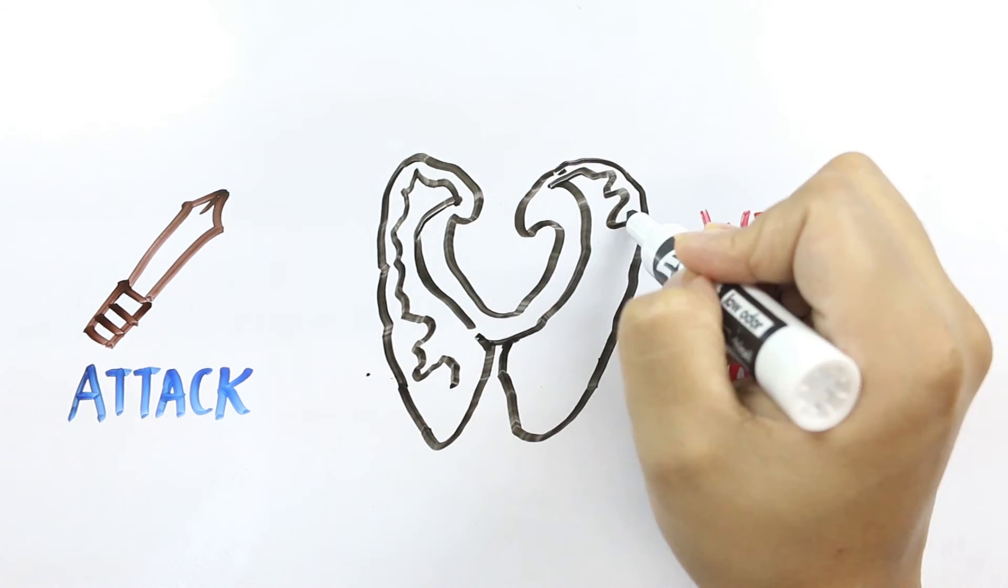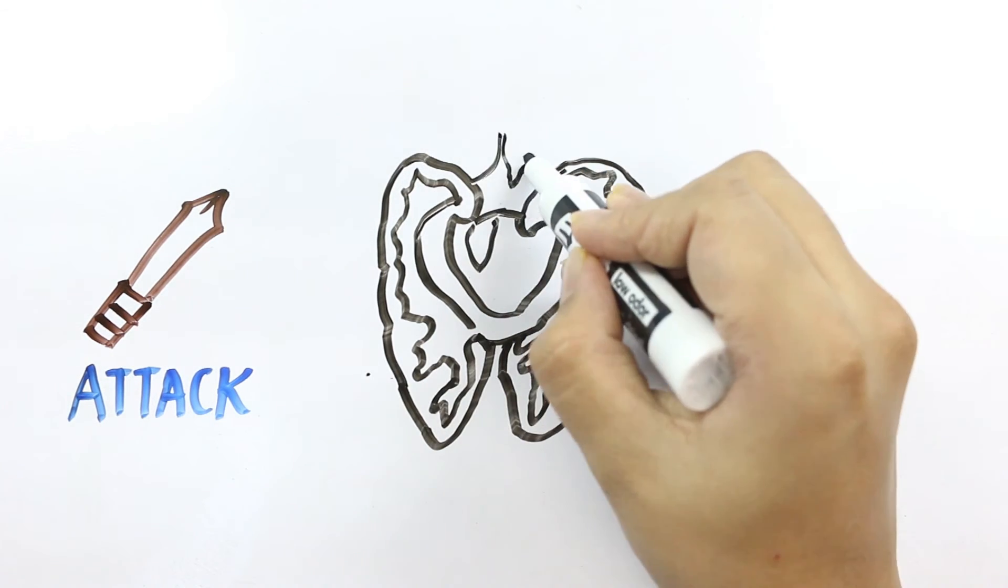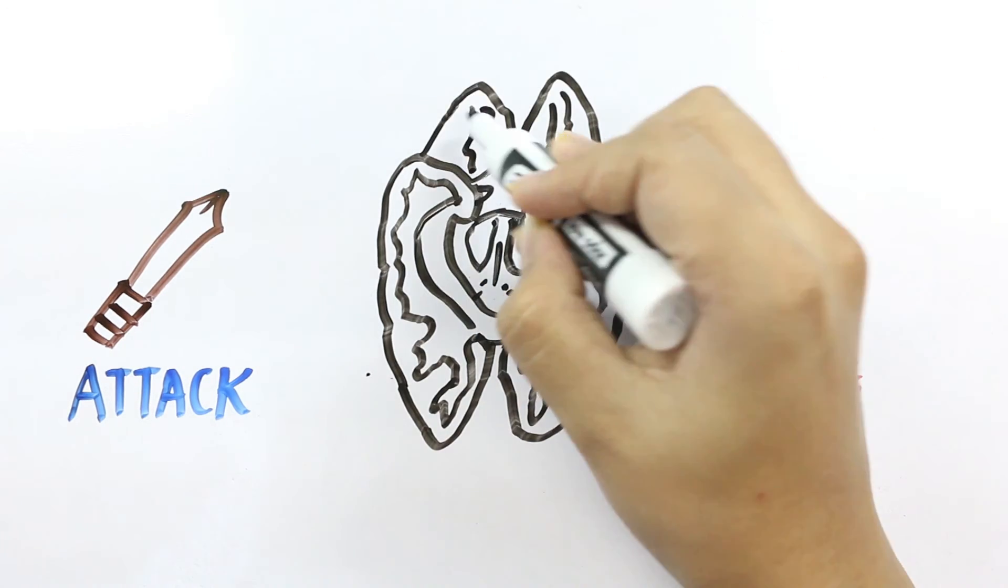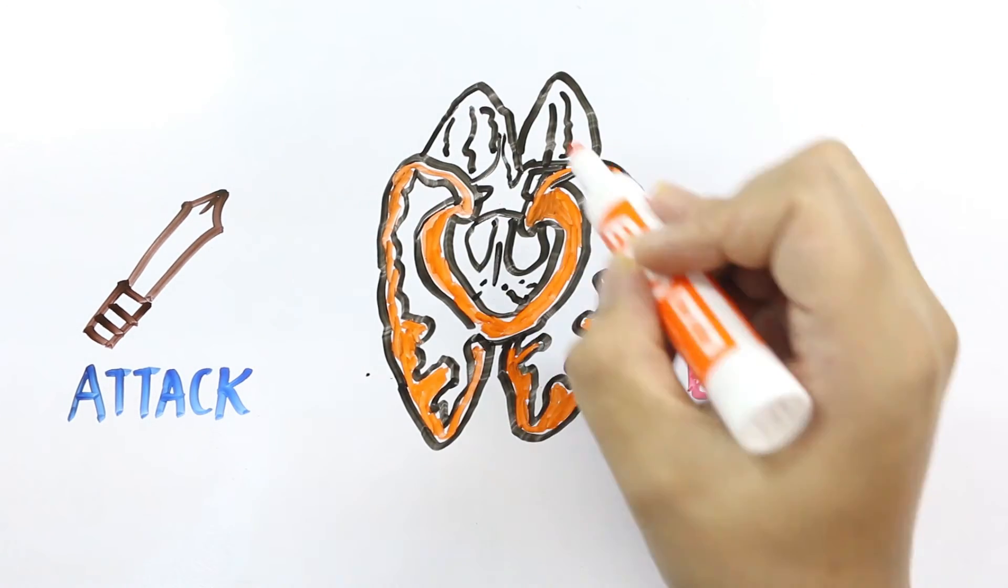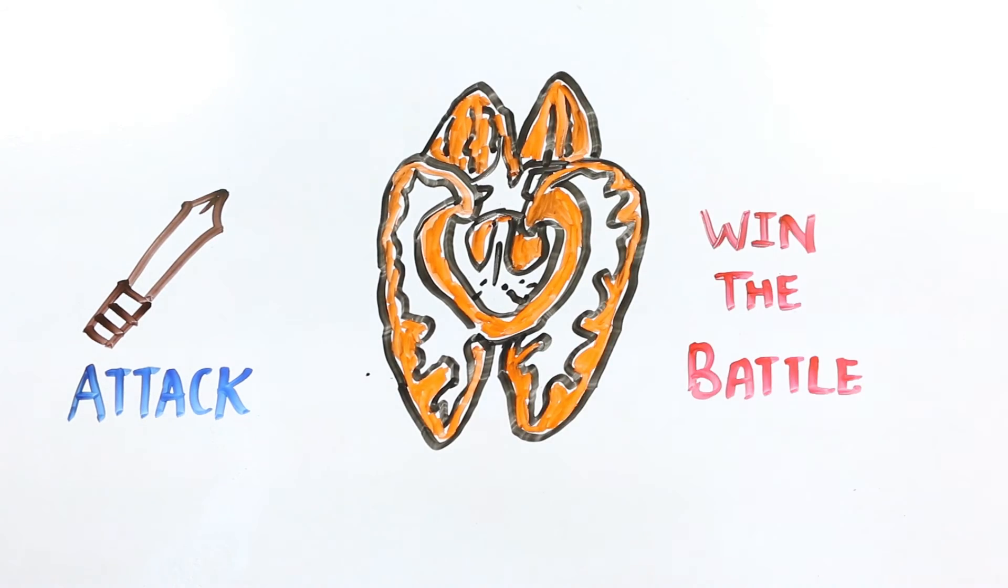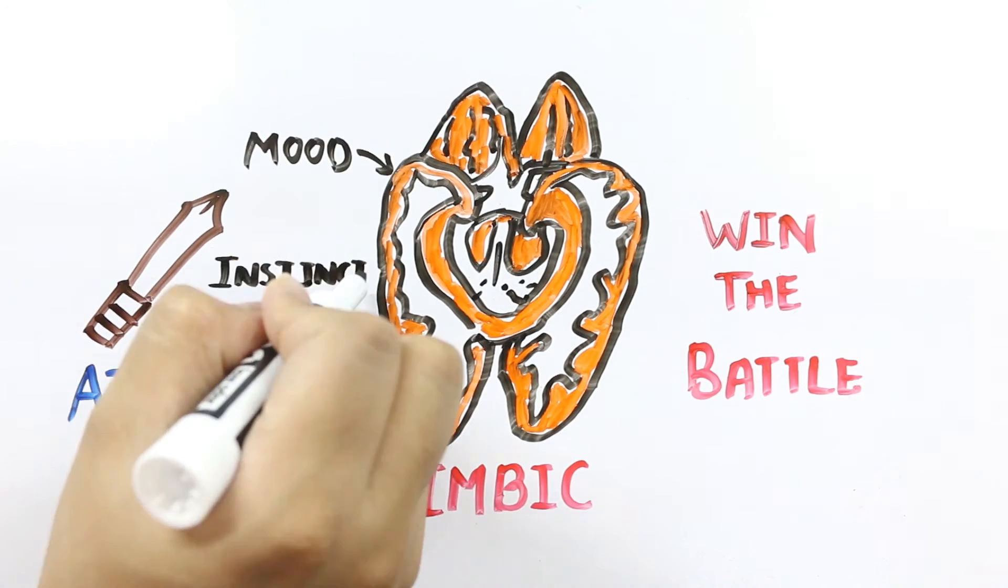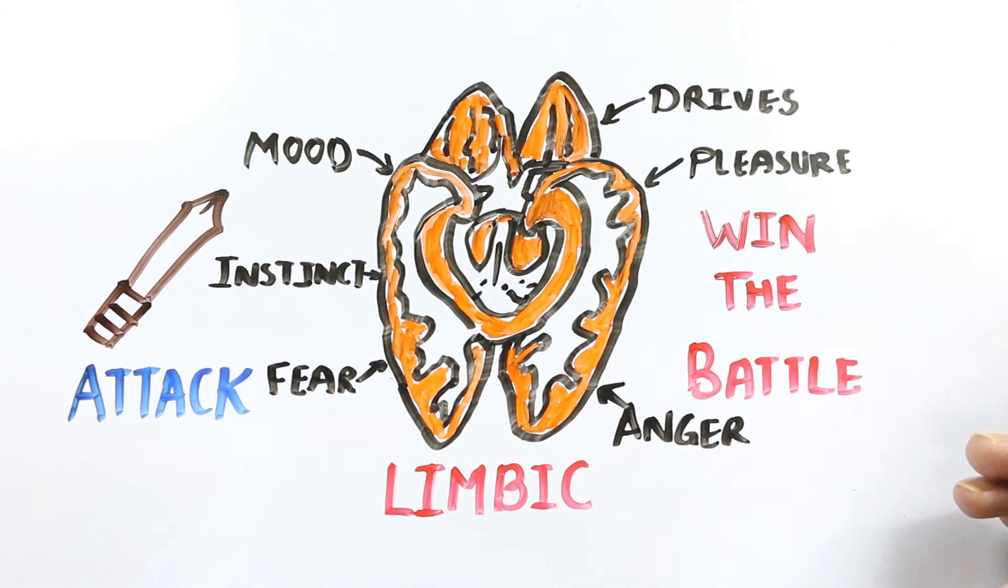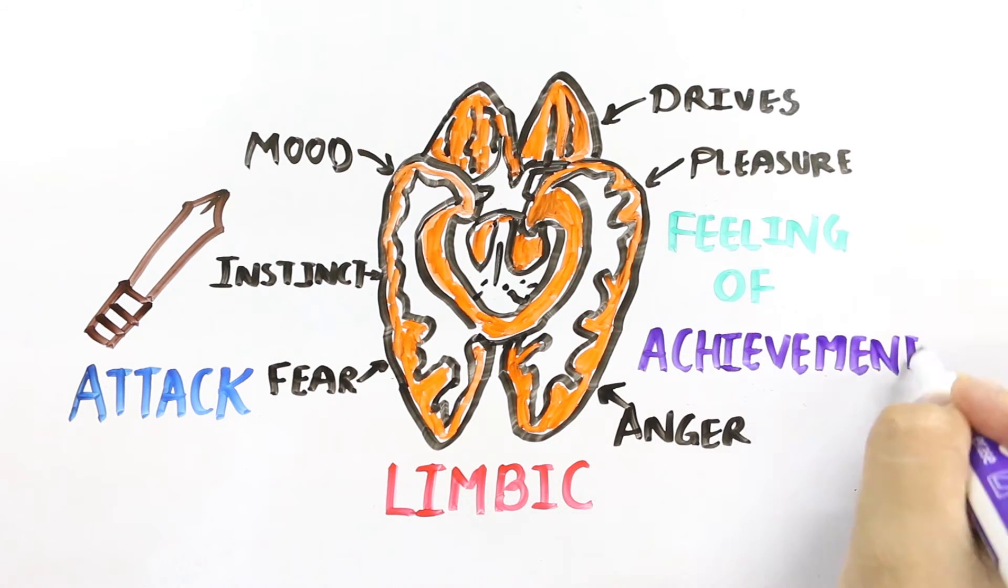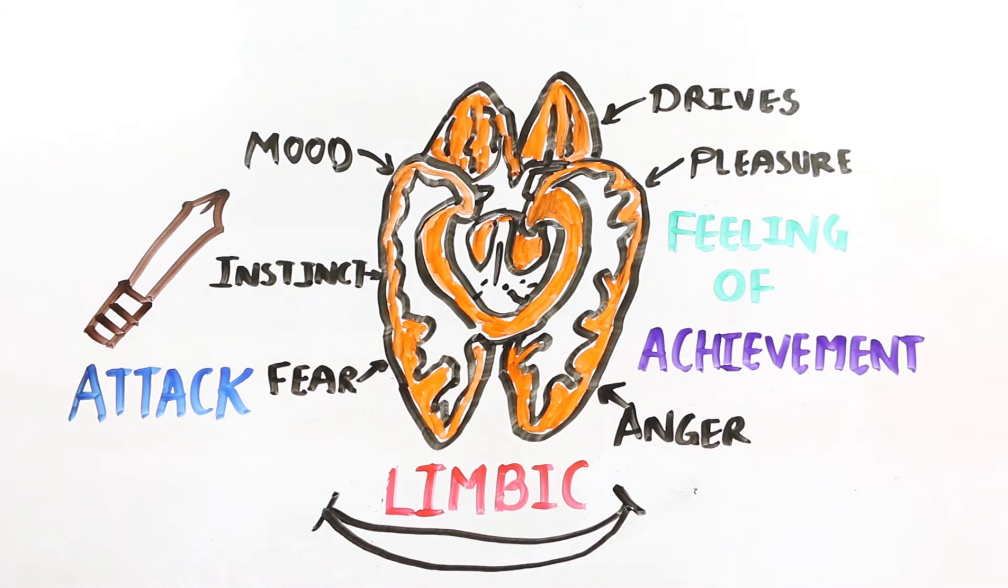our limbic system of the brain gets activated. It is a complex system of nerves and networks in the brain involving several areas near the edge of the cortex concerned with instinct and mood. It controls the basic emotions such as fear, pleasure, anger and drives. We experience the feeling of achievement which indeed makes us feel happy and more attached to the game.